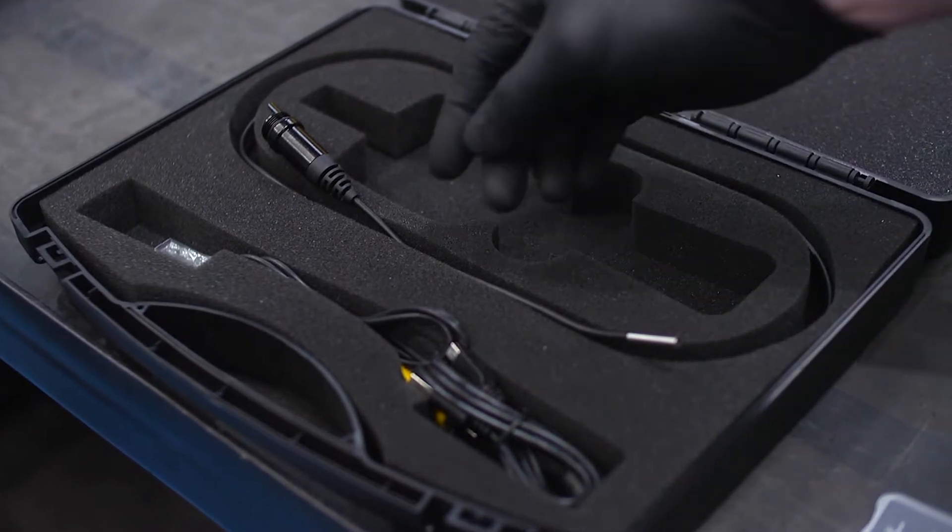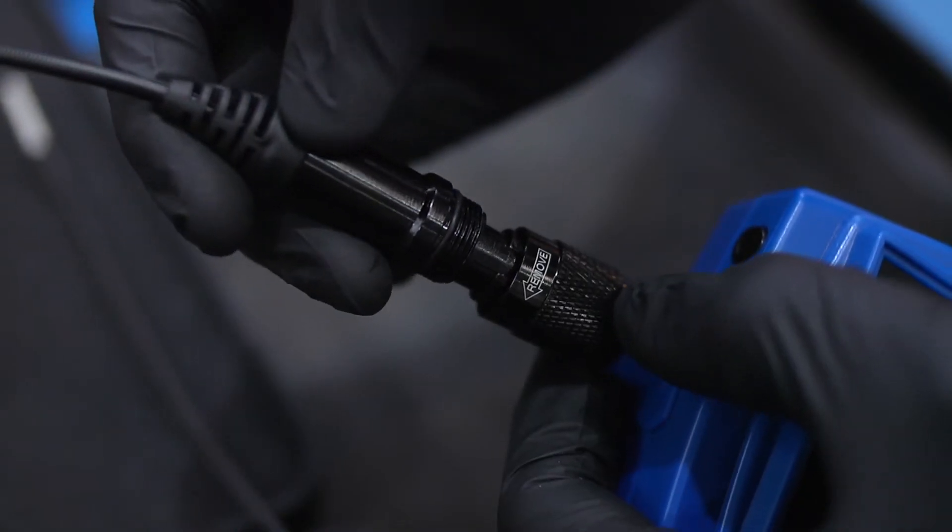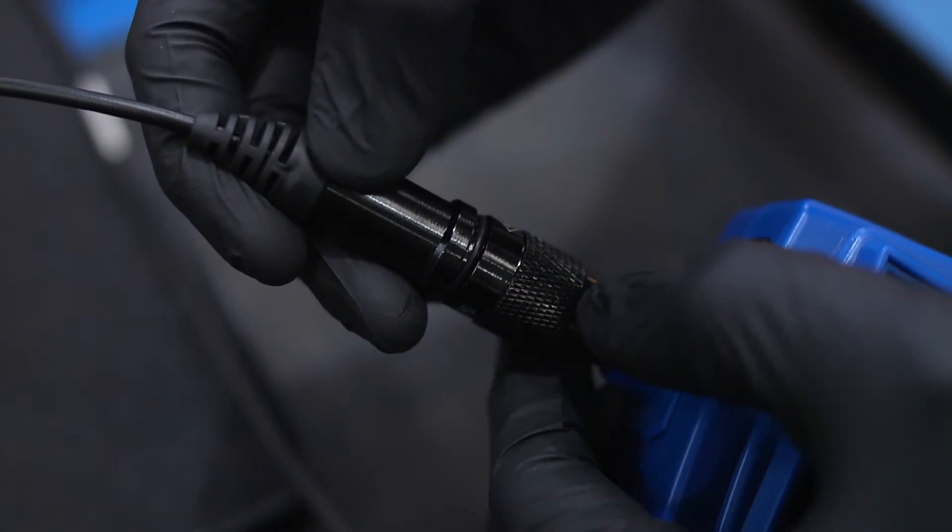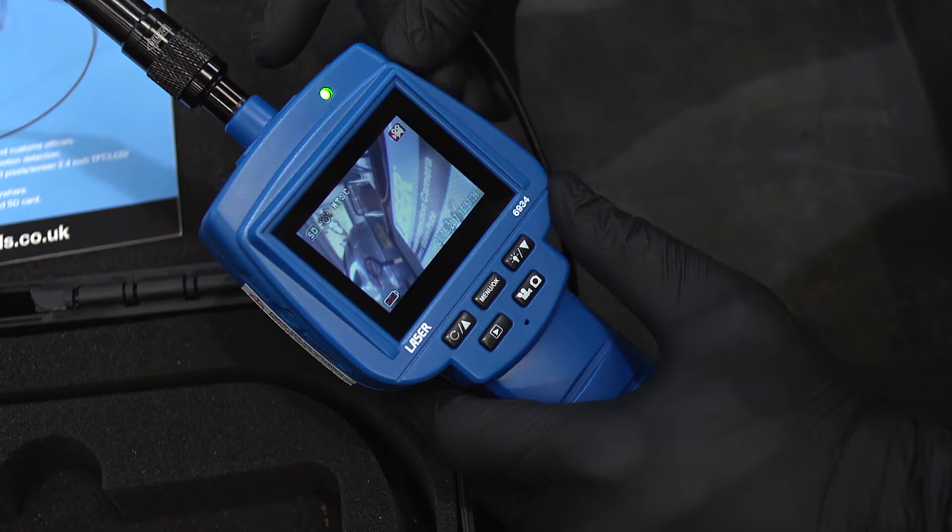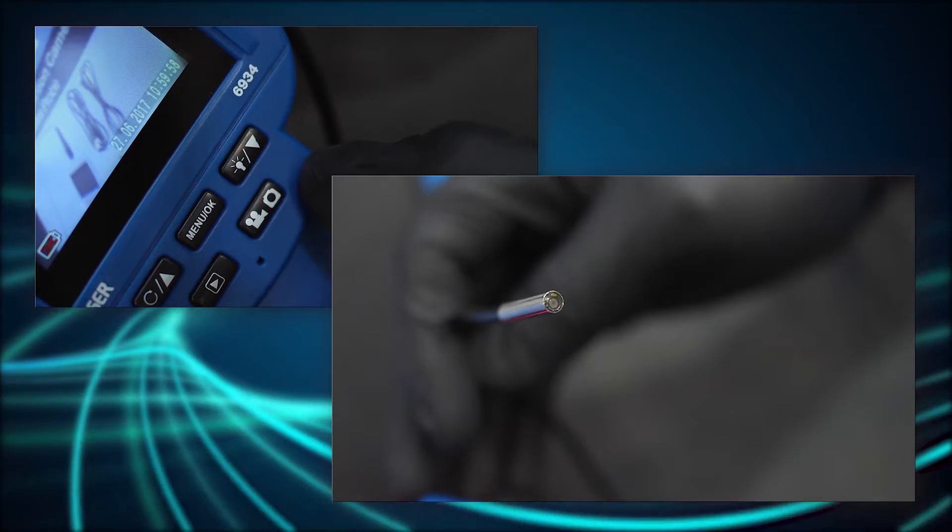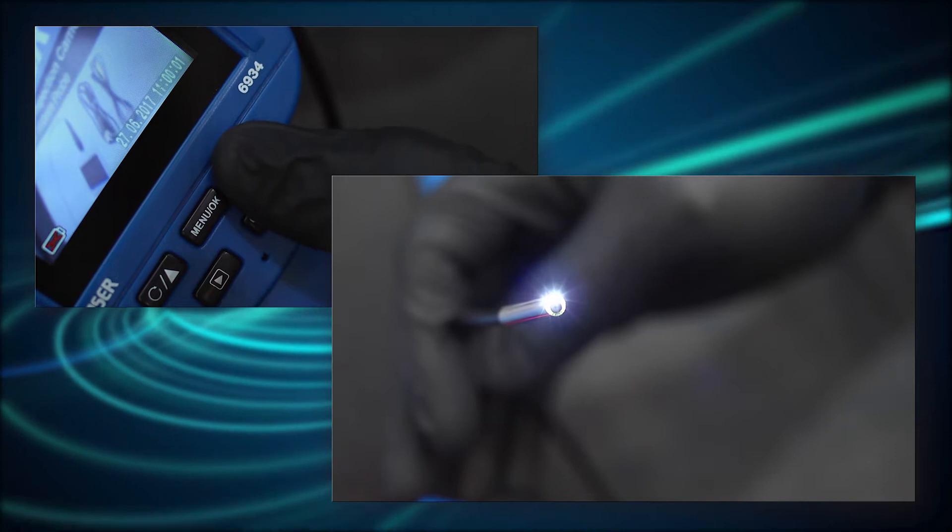The extremely flexible semi-rigid camera probe is one meter long and just 3.9 millimeters in diameter. The end of the probe is fitted with two LEDs which have six levels of brightness.